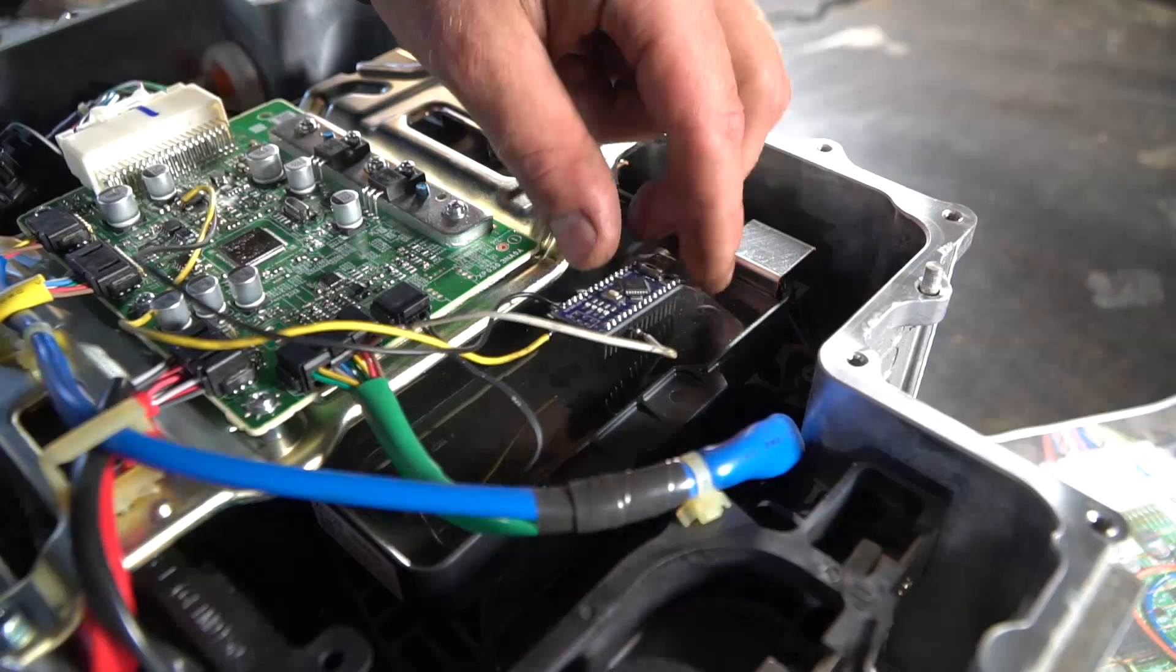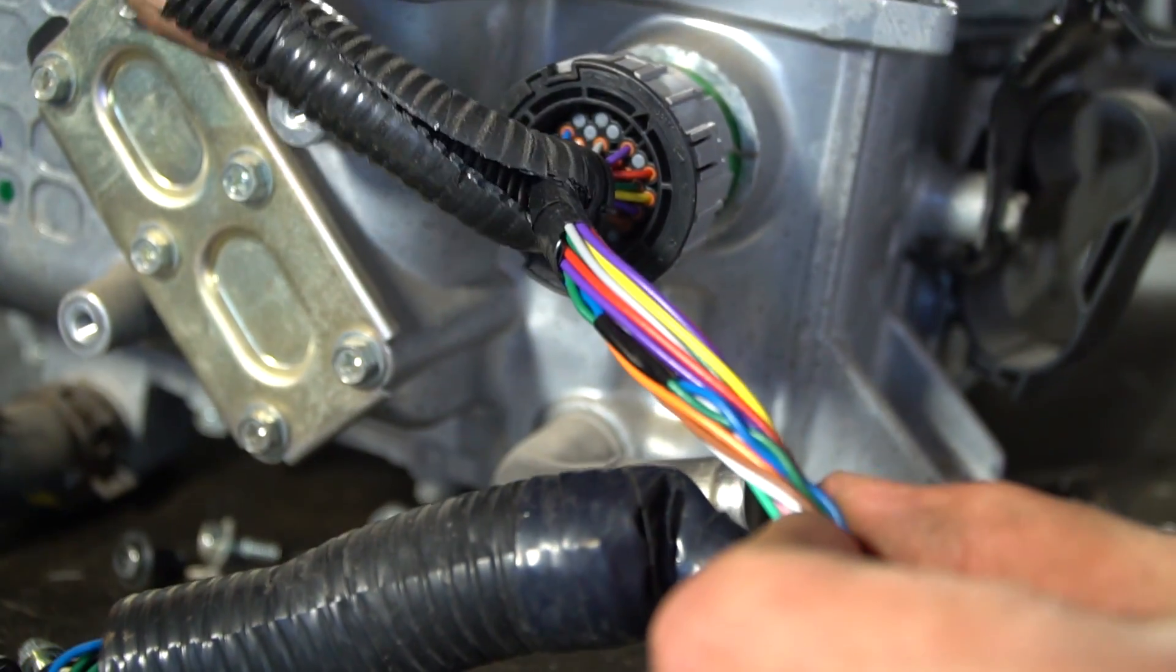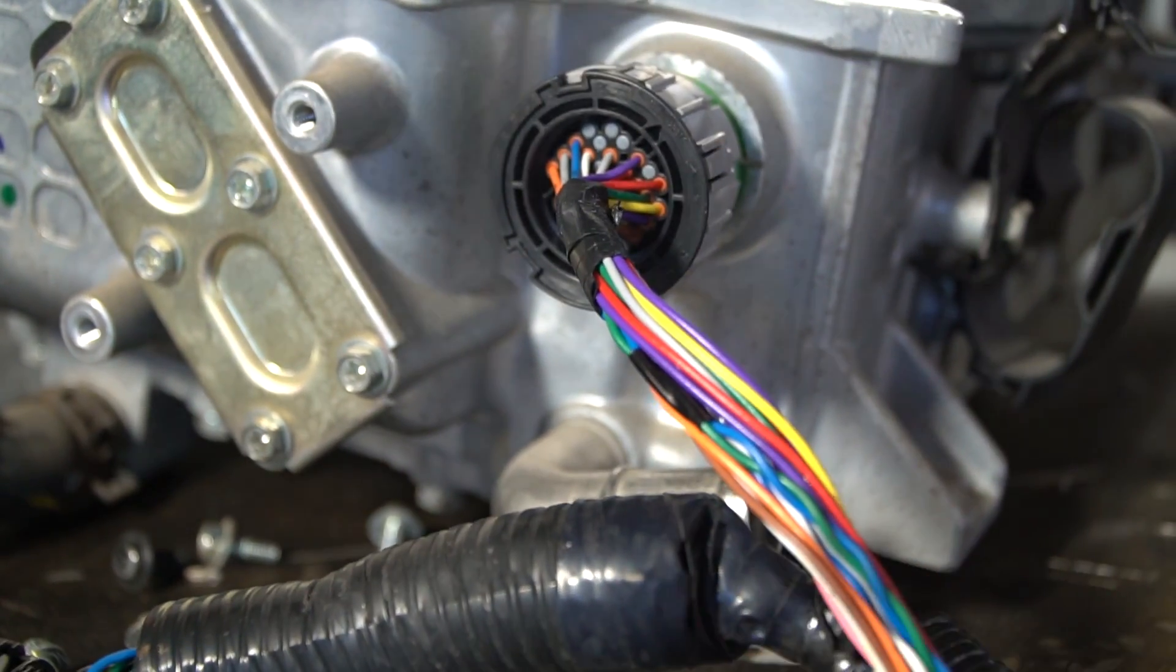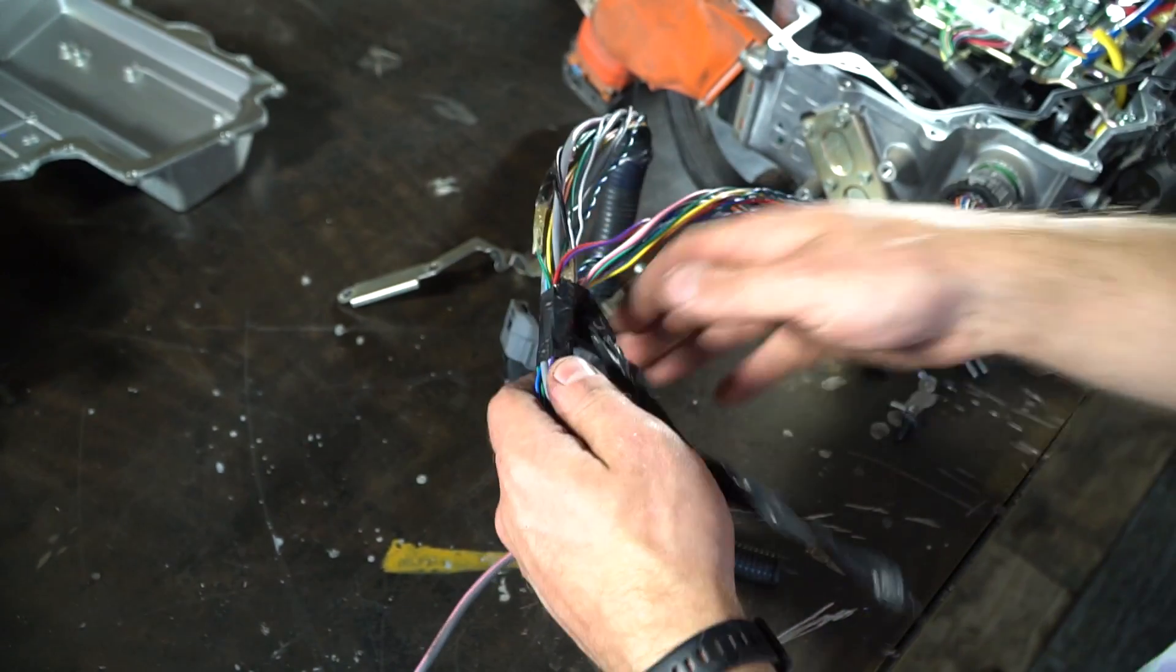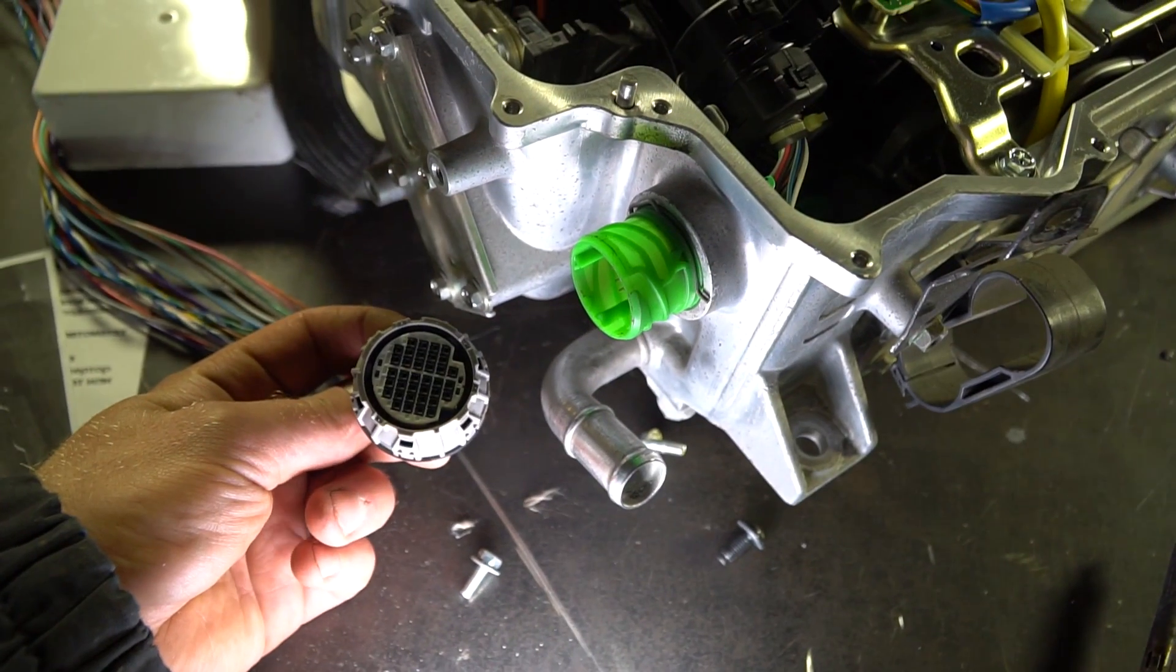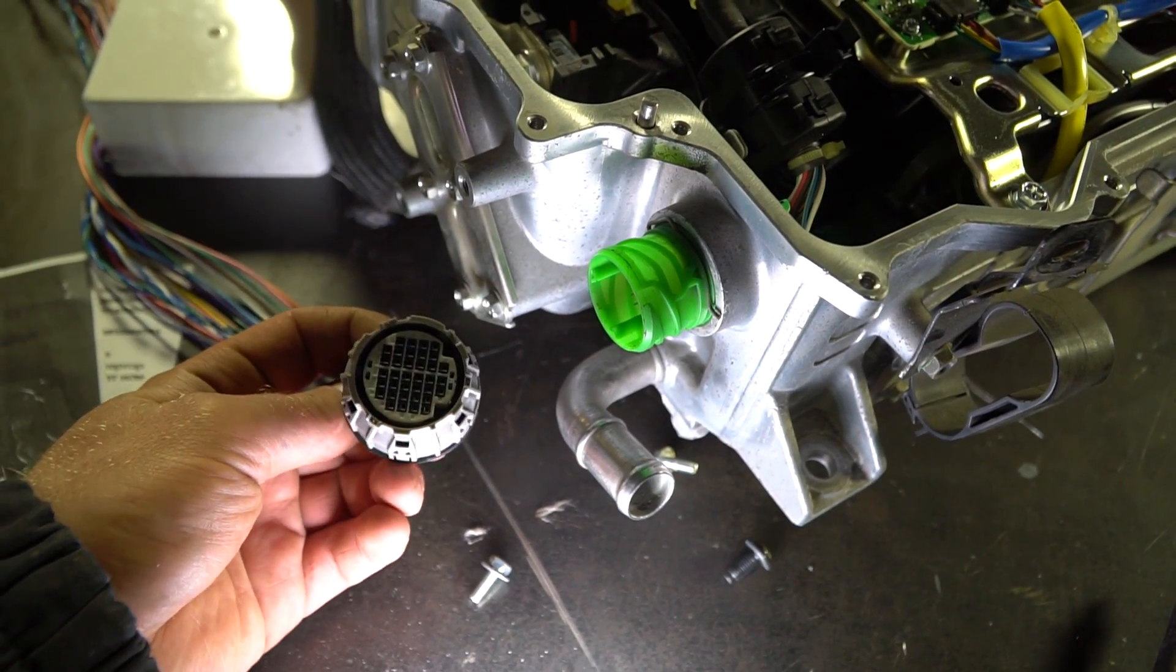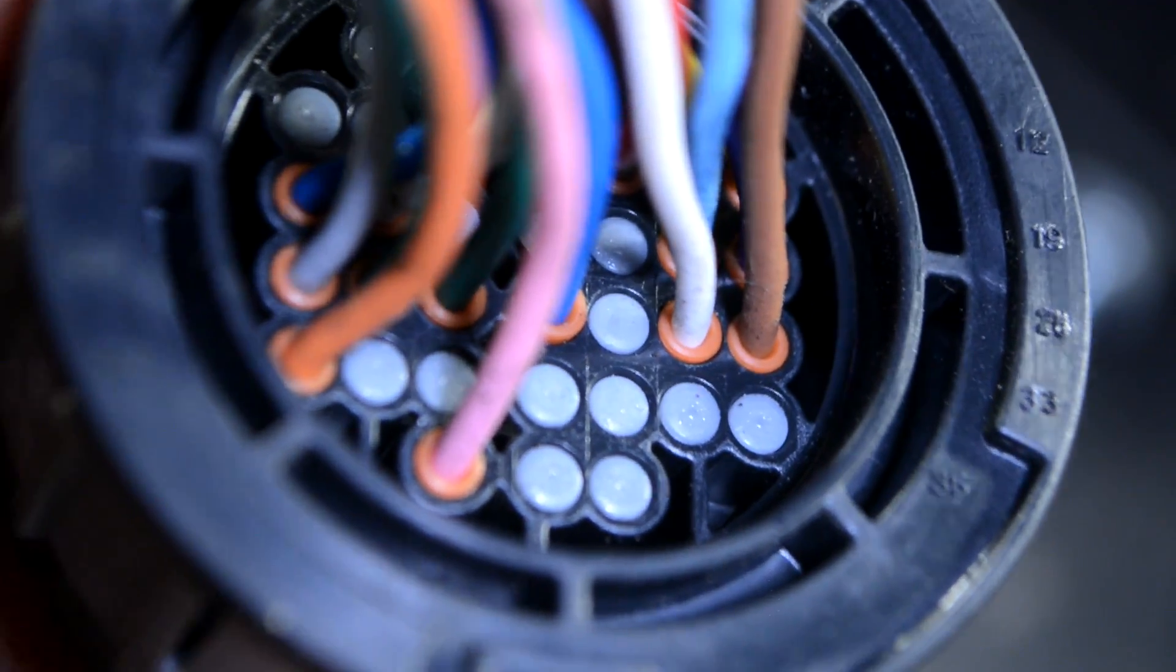Next, we need to connect the inverter to the resolver on the electric motor. In simple words, the inverter should understand in what position and at what speed the motor rotor is spinning. Everything also turned out to be not so easy, as the restyling wiring absolutely didn't fit the old inverter. Fortunately, the socket was the same.